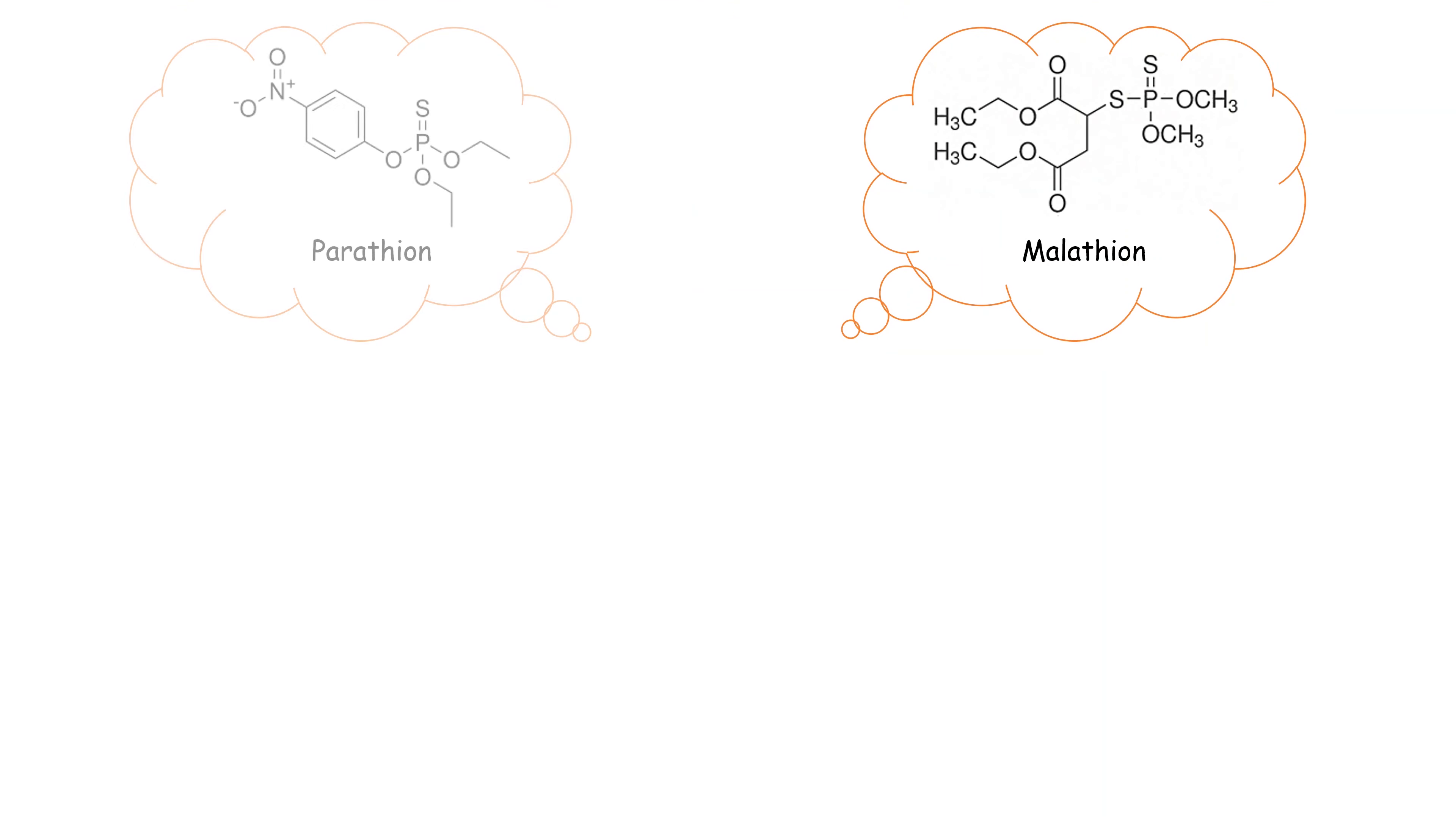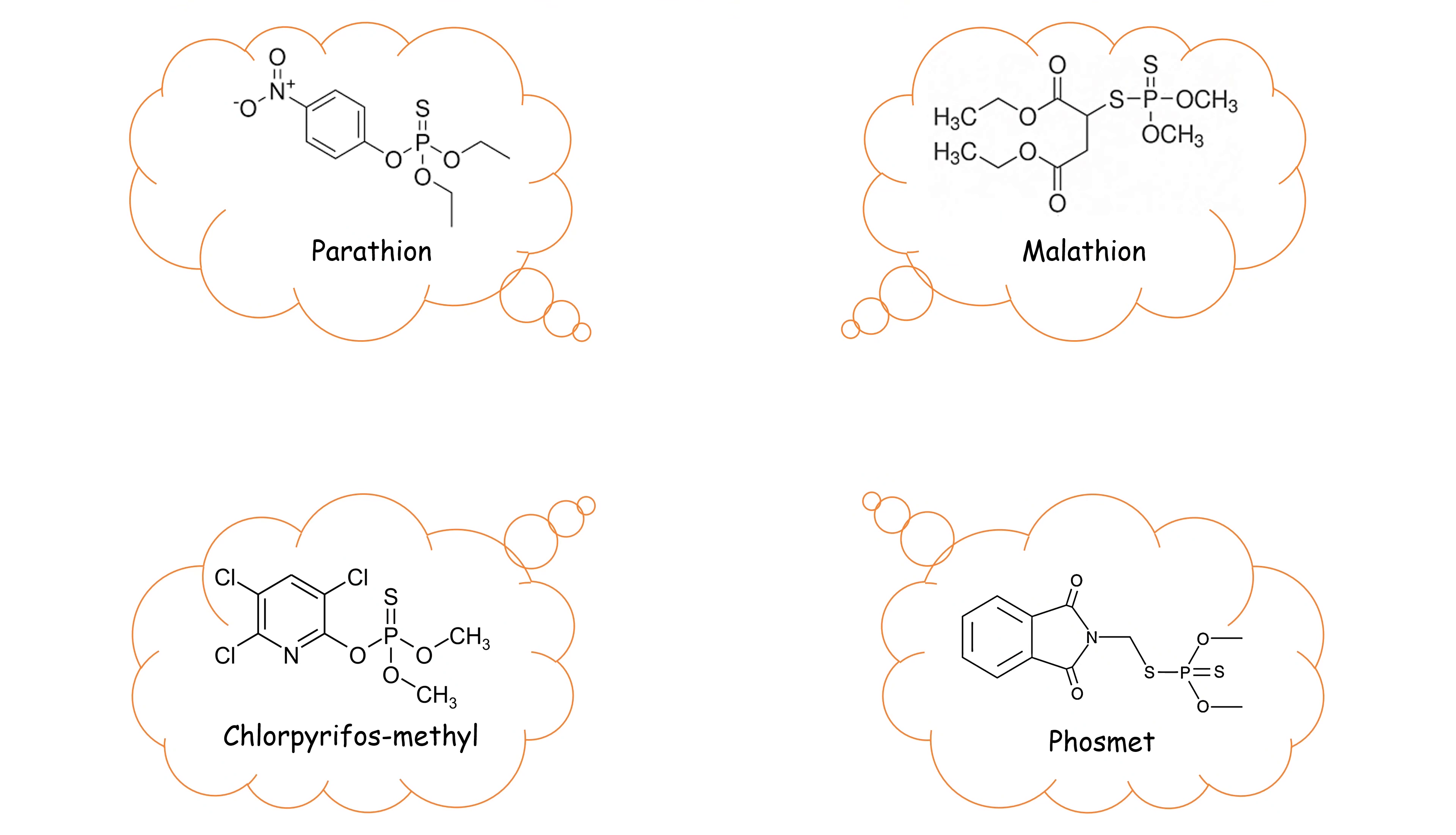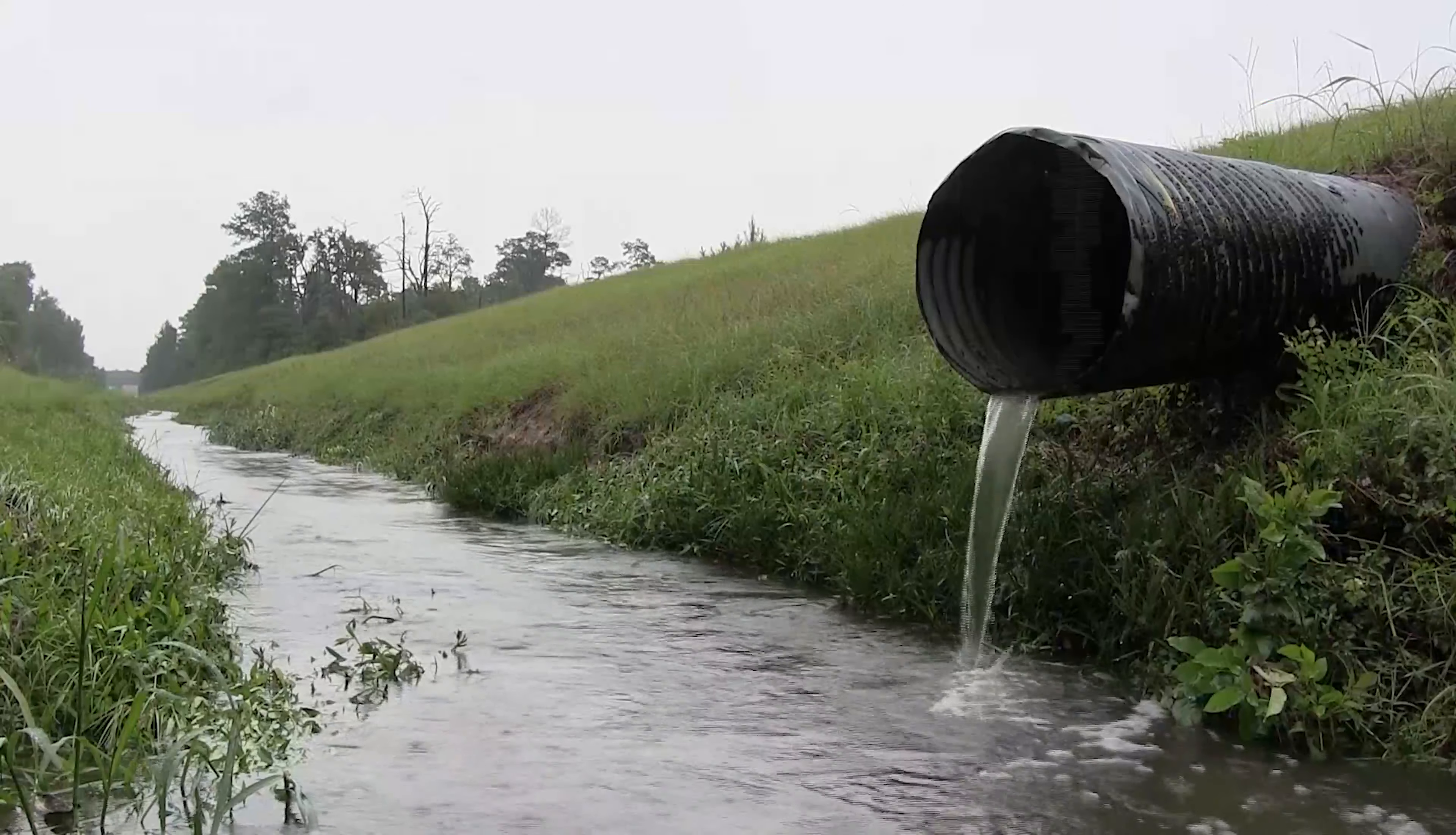Malathion and Parathion belong to a class of pesticides known as organophosphates. However, they leach into water bodies through agricultural runoff.